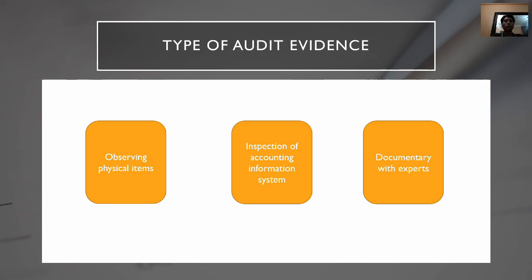Next is the inspection of accounting information software. An accounting information system is where the entity's records are created and stored, consisting of ledgers and journals. Since the financial statements are prepared from this data, auditors are required to understand the financial reporting process, including how transactions are entered initially from the system itself. The records are then tested for accuracy by performing analysis, reperformance, and reconciliations. If the internal controls over this process are adequate, the reliability of the ledgers and journals as audit evidence is high.